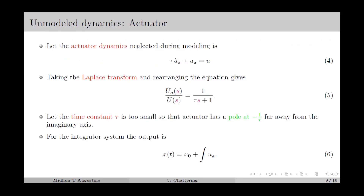Even if we have an ideal relay without any switching delay, Chattering can still occur. This is mostly because of unmodeled dynamics, which is primarily the faster dynamics of actuators or sensors that we neglect during modeling. This unmodeled dynamics results in a delay in switching and leads to Chattering.